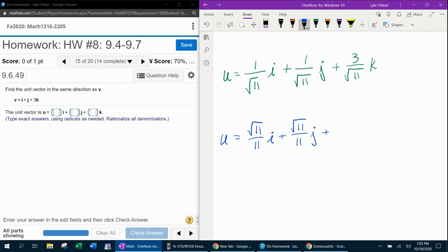And for the k component, if I copy and paste and then erase, that's going to give me 3 square root of 11 over 11, times k.